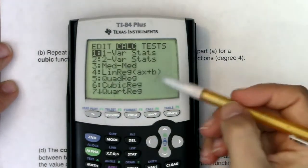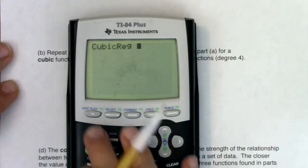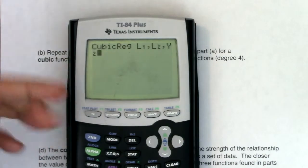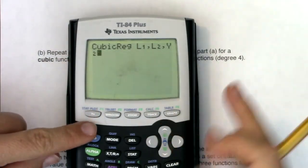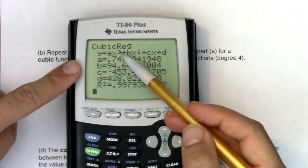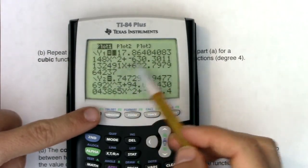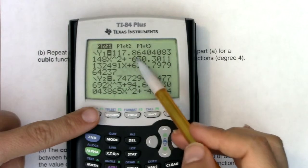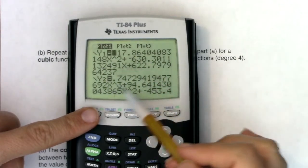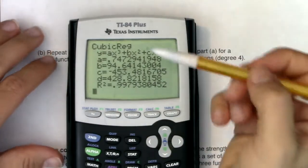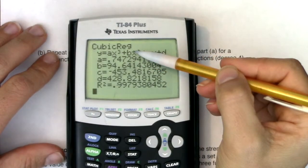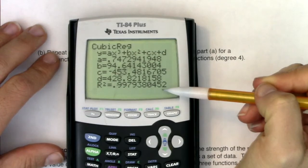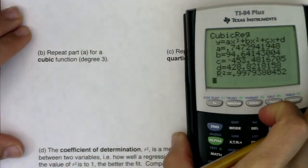Let's go see what the cubic model would be. I'm going to put the cubic model into Y2, and then I'll drop the quartic model into Y3. Stat, calc. For cubic you need option 6. I'm going to go L1 against L2, but I'm going to drop it into Y2. If you keep this as Y1, your calculator would take this cubic function and overwrite what was in Y1. You would lose the parabola.